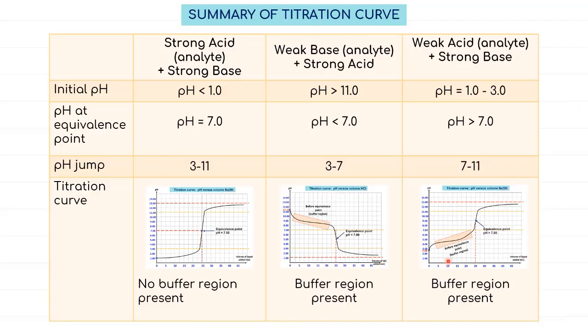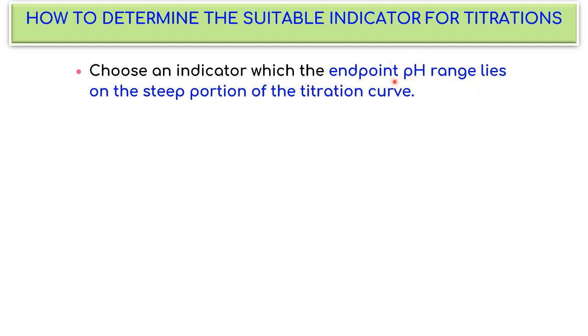Here is a summary of the titration curves that are possible. Although only three diagrams are shown, there can be up to six due to the interchangeable roles of the analyte and titrant. You need to memorize all four steps to draw the titration curve correctly. A careful selection of indicator will reduce indicator error — choose an indicator whose endpoint pH range lies within the steep portion of the titration curve, so the pH at the equivalence point falls within the indicator's color-change range.